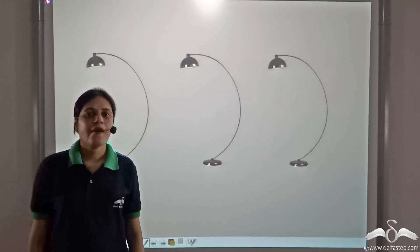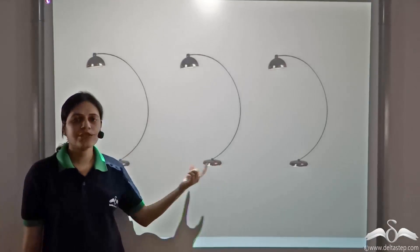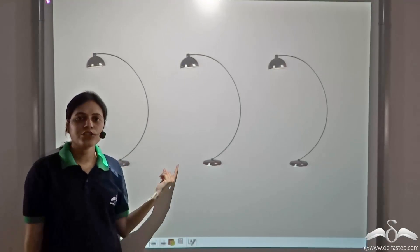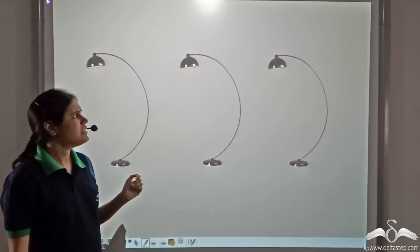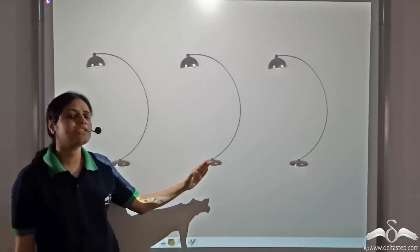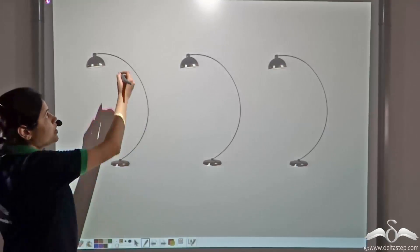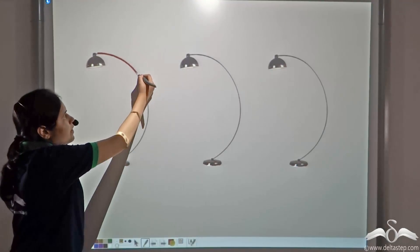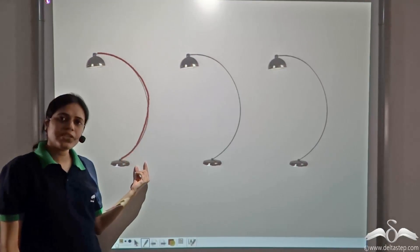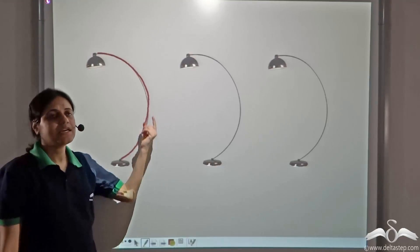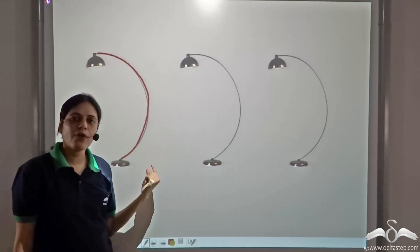A lamp dealer got an order to make three lamps of this shape. The lamps should be absolutely identical — that is, of the same shape and the same size. Can you identify this part of the lamp? This part of the lamp is in the shape of an arc.